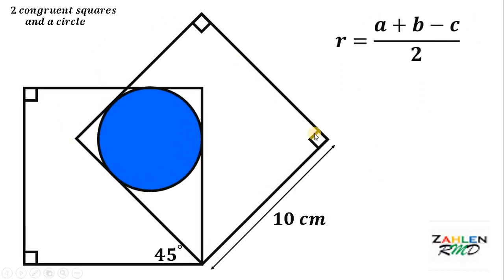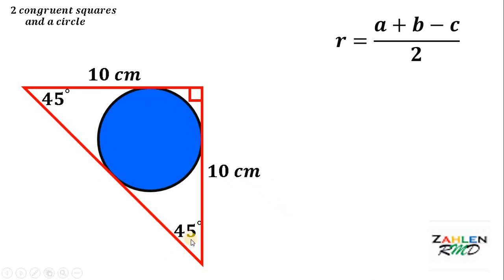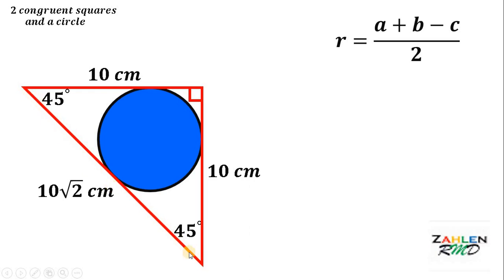To do that, take note that the second square is tilted 45 degrees. Therefore, if we extend this side, we create a right triangle. Now, since we have a right triangle and a circle, we can now find the radius of the circle. Take note that this is the diagonal of the square, so these two angles must be 45 degrees, and the length of the side of this square must be equal to 10 centimeters. Since it is a 45-45-90 right triangle, the length of the hypotenuse, or the diagonal of the square, must be equal to 10 times the square root of 2 centimeters.